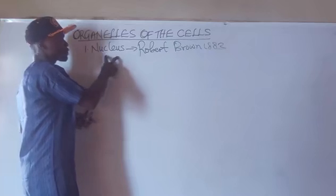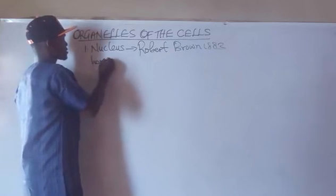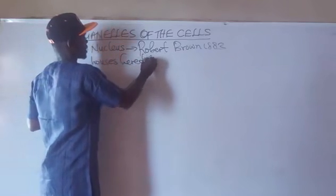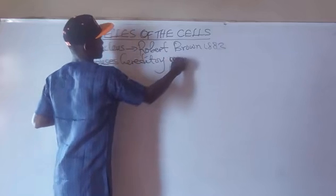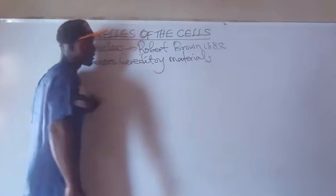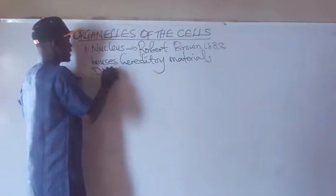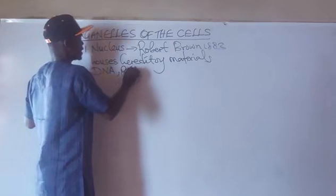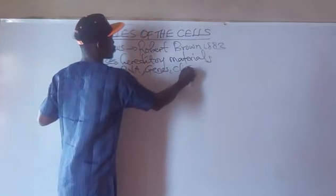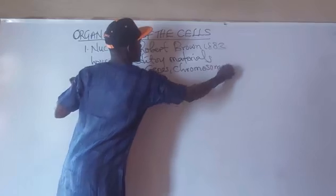What is the function of the Nucleus? The function of the Nucleus is that it houses hereditary materials — it stores hereditary materials. It means that the DNA, the RNA, the genes and chromosomes are all found in the Nucleus.